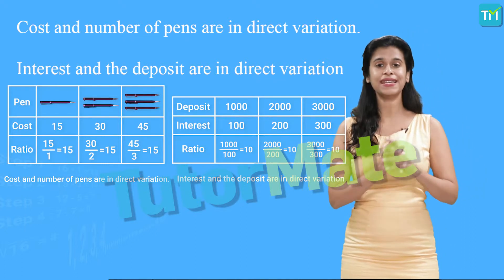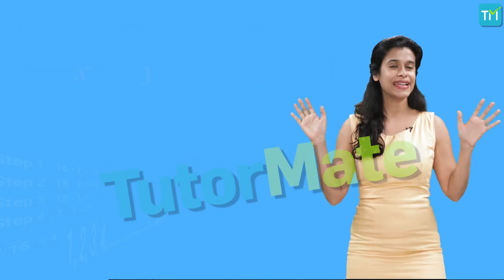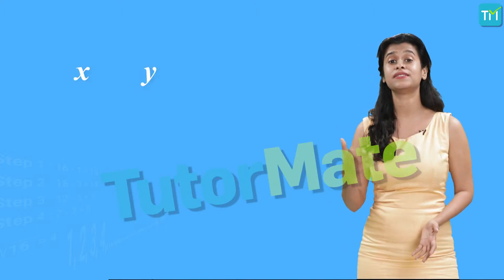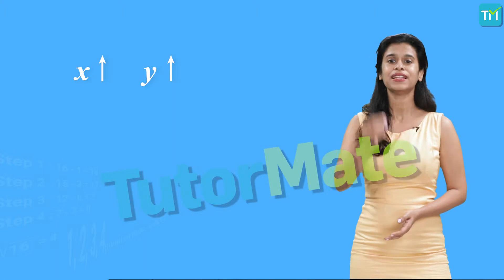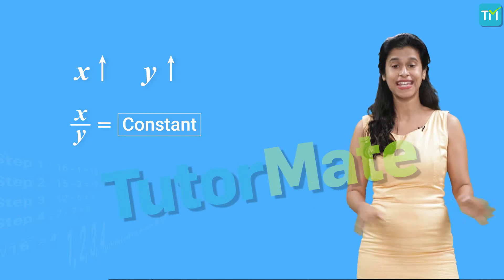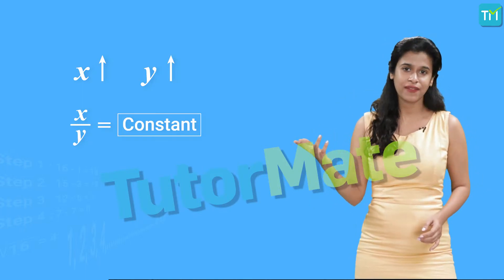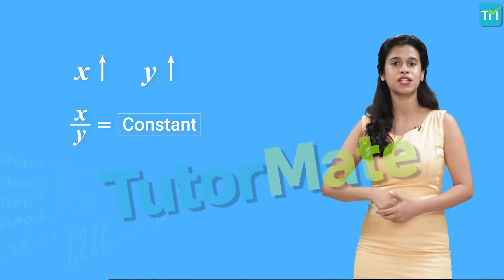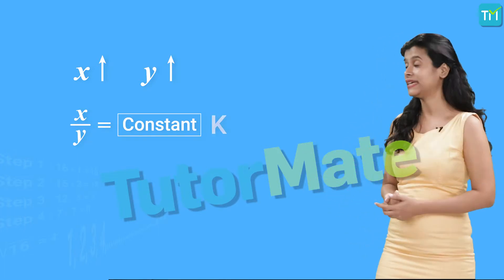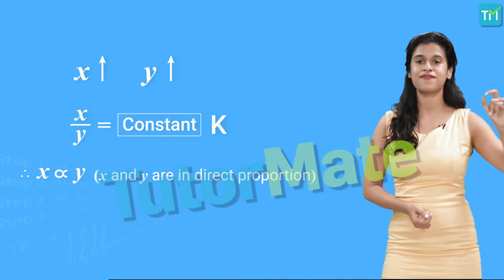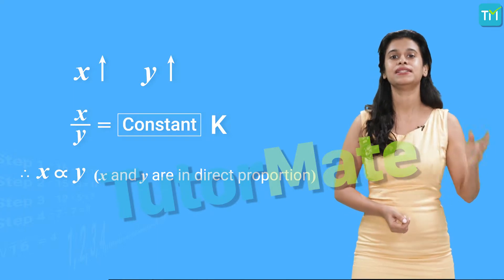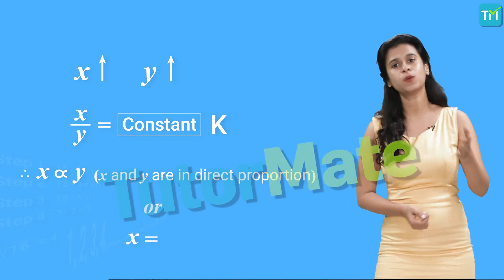Similarly, the interest paid by the bank and the amount deposited are also in direct variation, because as the deposit increases, even the interest increases. In general, let's say we have two quantities X and Y. If as the values of X increase the value of Y also increases, in such a way that the ratio X to Y does not change and remains constant — this constant could be any value, so let's assume it is represented by the letter K — then we say that X and Y are in direct proportion if X to Y equals K, or X equals KY.